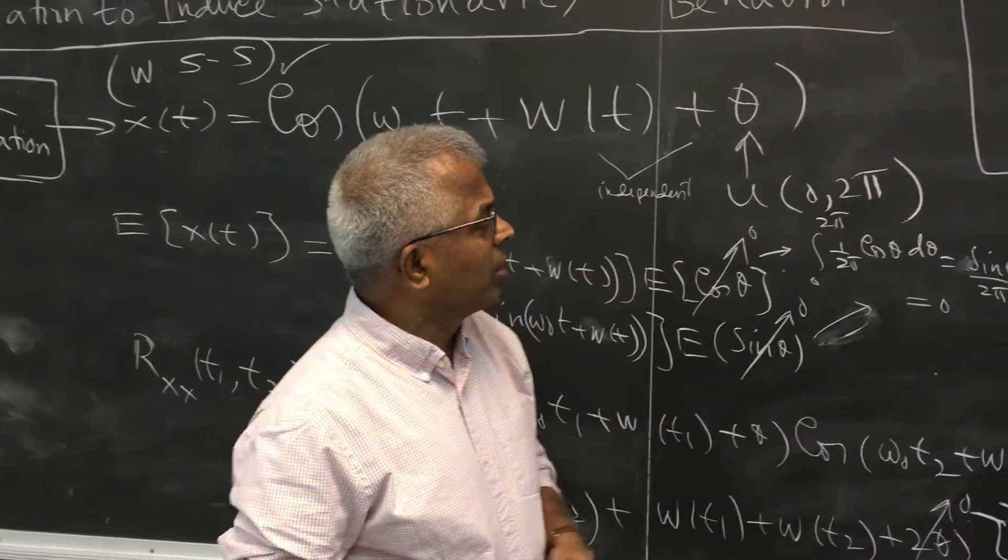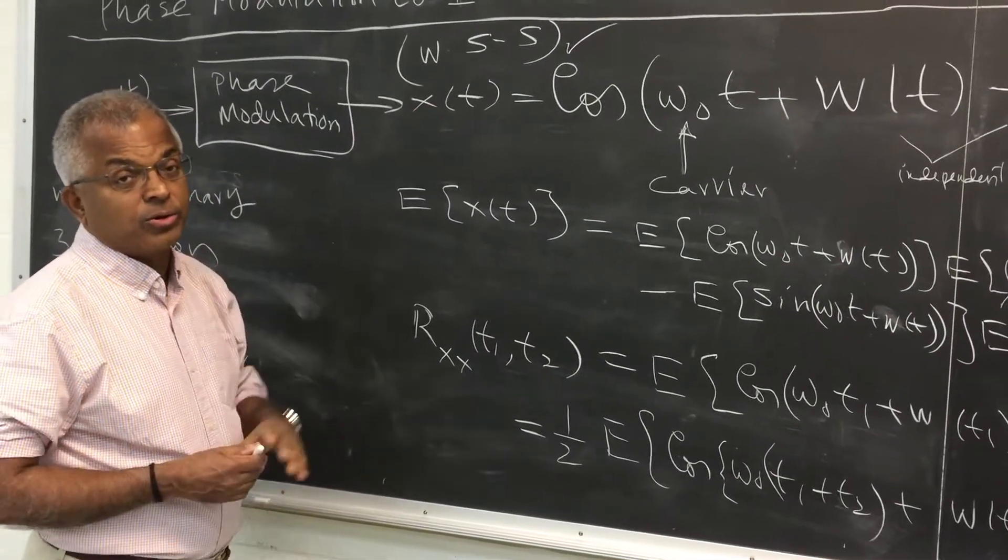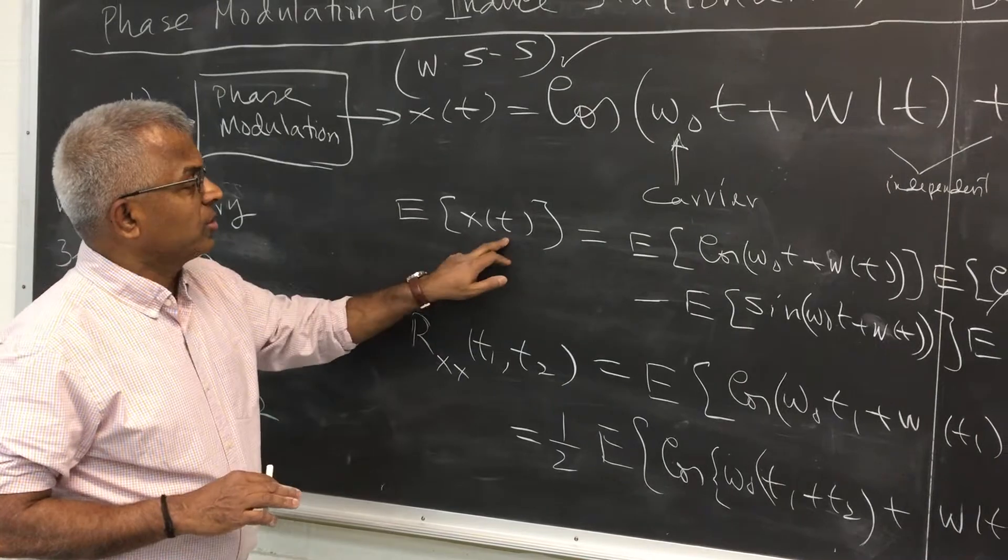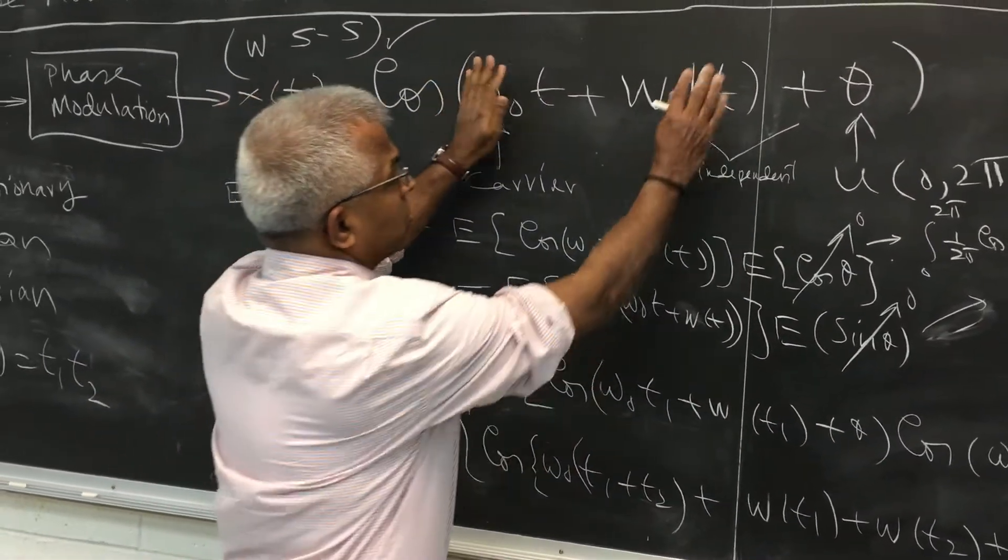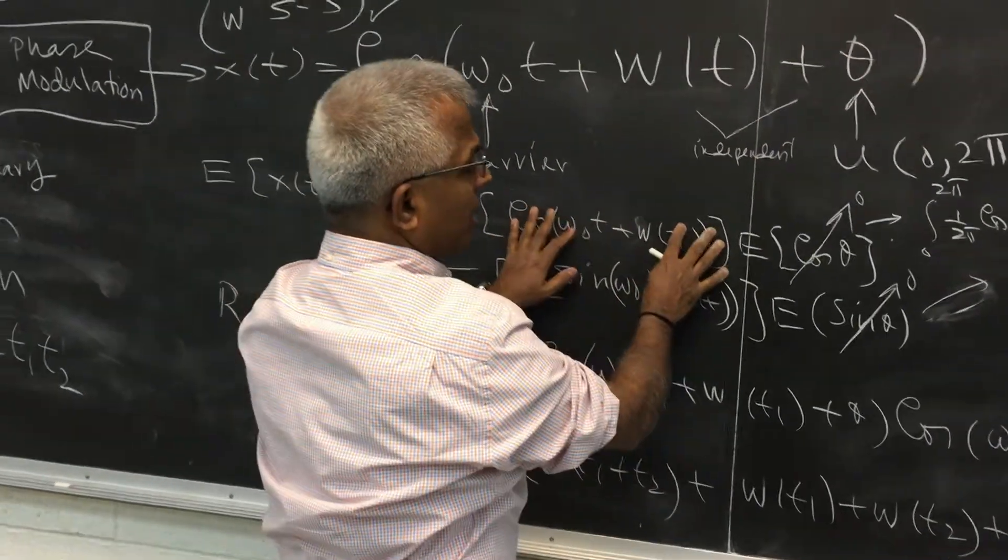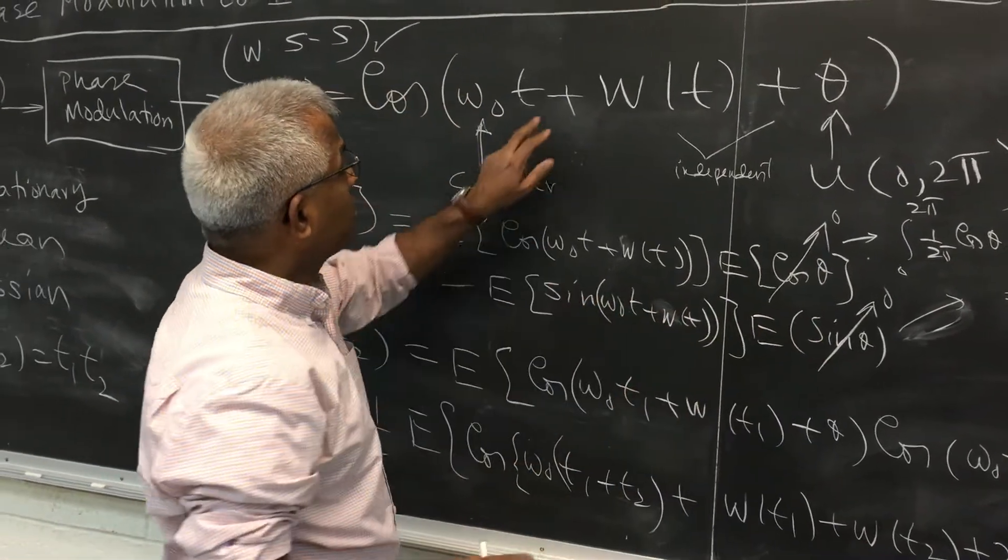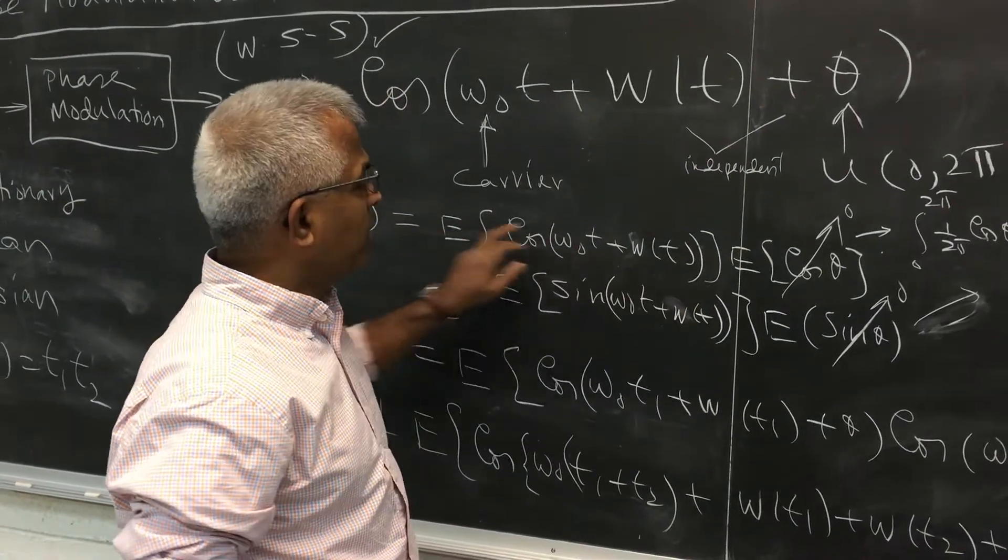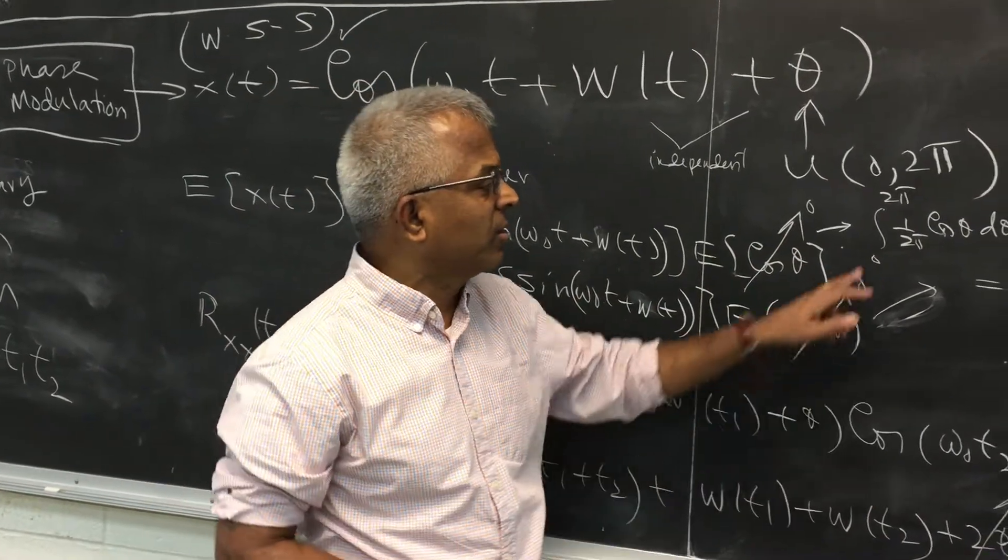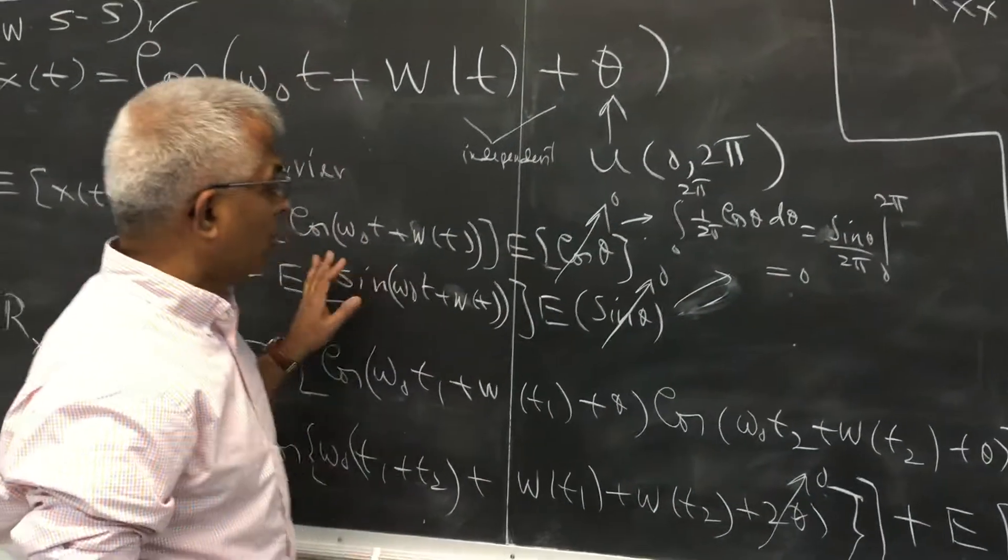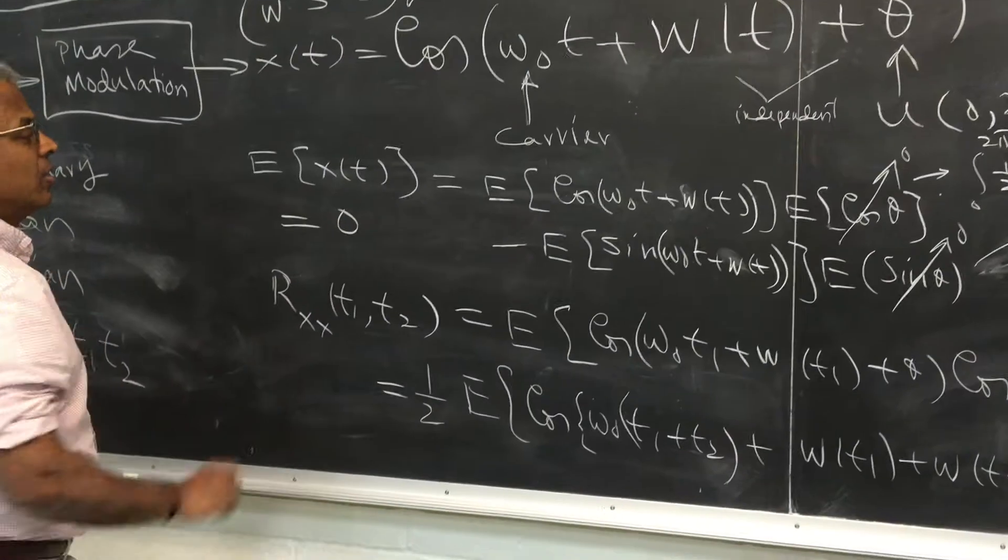Let's look at the expected value. I want to find out the expected value and the autocorrelation of x(t). Expected value of x(t) can be expanded as cosine a times cosine b minus sine a sine b. Because I'm assuming these to be independent, expected value hits both of them separately. But expected value of cosine theta and sine theta when theta is uniform is 0. So this whole expected value, x(t) has 0 mean.